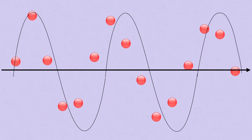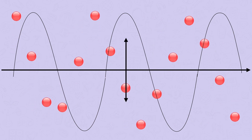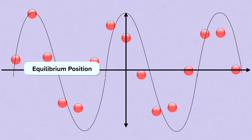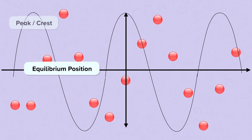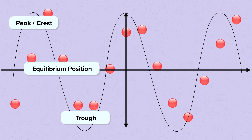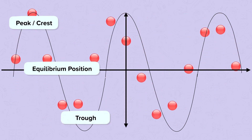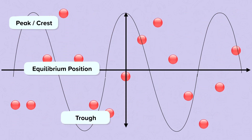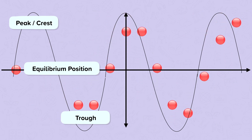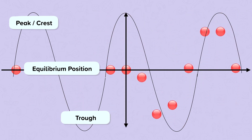A wave transfers energy without transferring matter. The molecules are moving up and down about a fixed point. They are not moving towards the right like the wave is — they all stay where they started. The fixed point they vibrate about is called the equilibrium position.